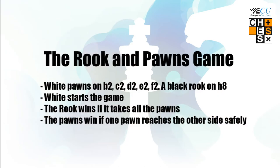The rook and pawns game. Put white pawns on b2, c2, d2, e2 and f2 and a black rook on h8. White starts the game. The rook wins if it takes all the pawns. The pawns win if one pawn reaches the other side safely.